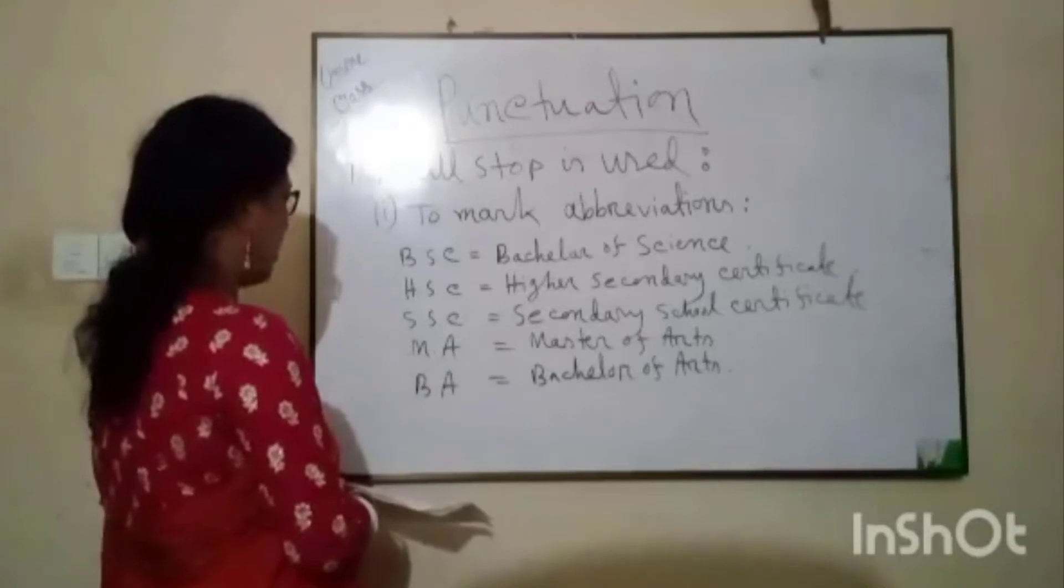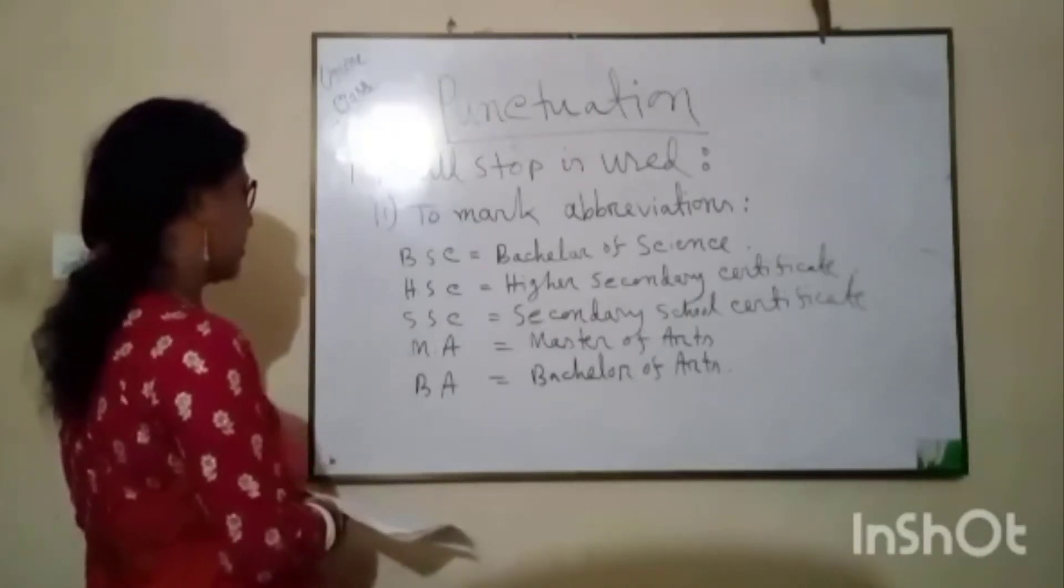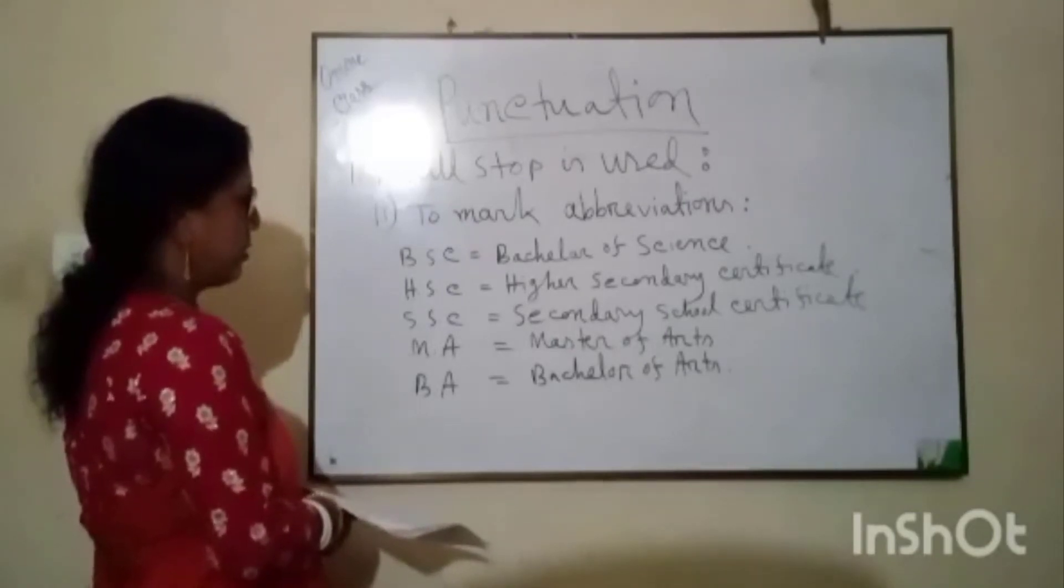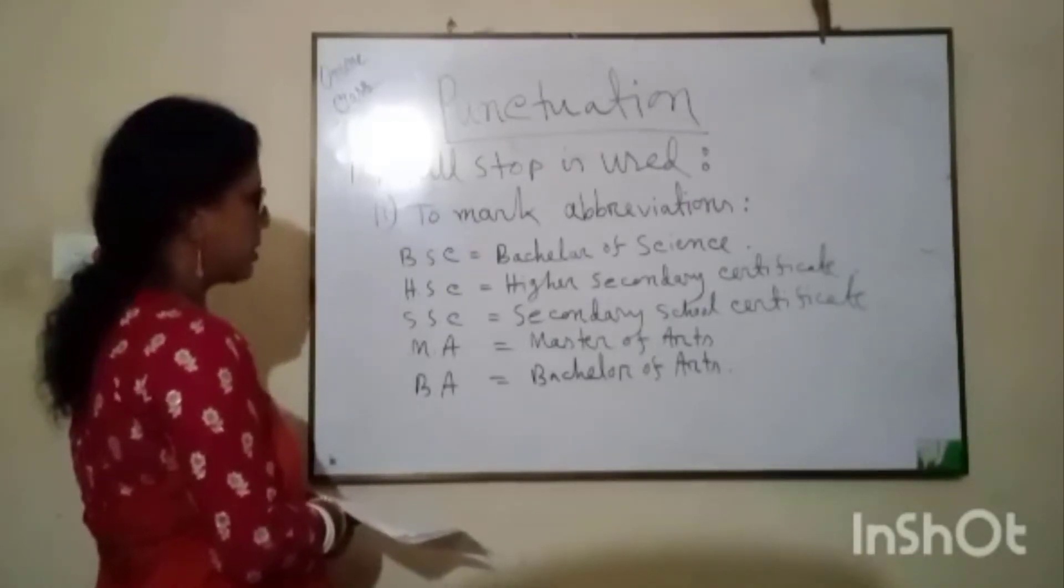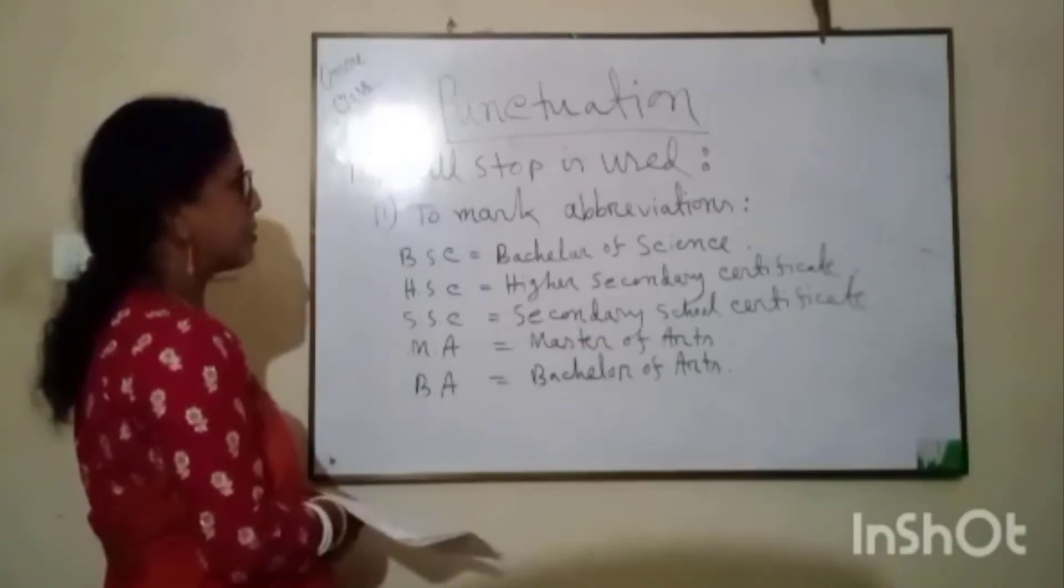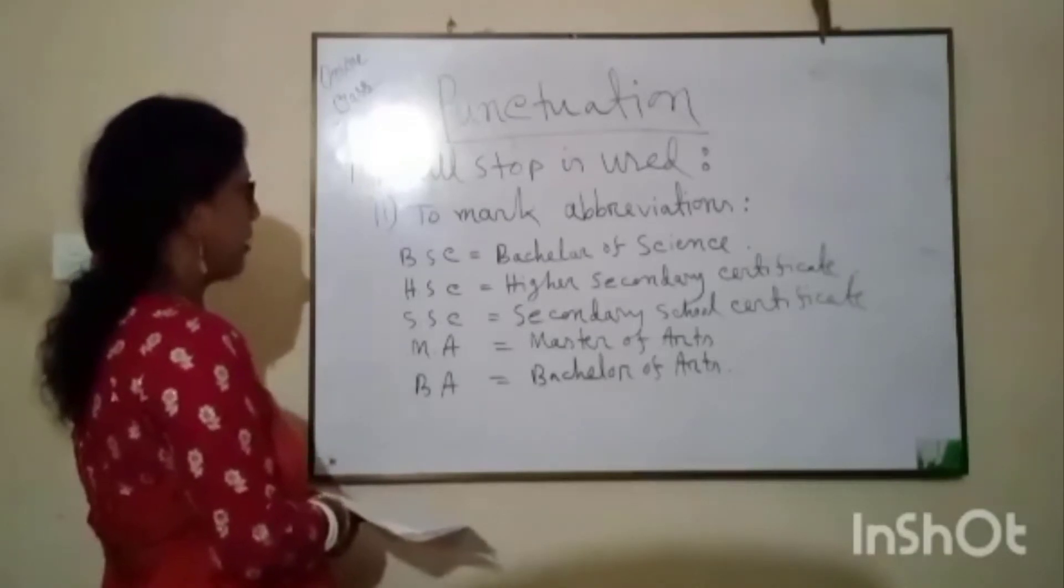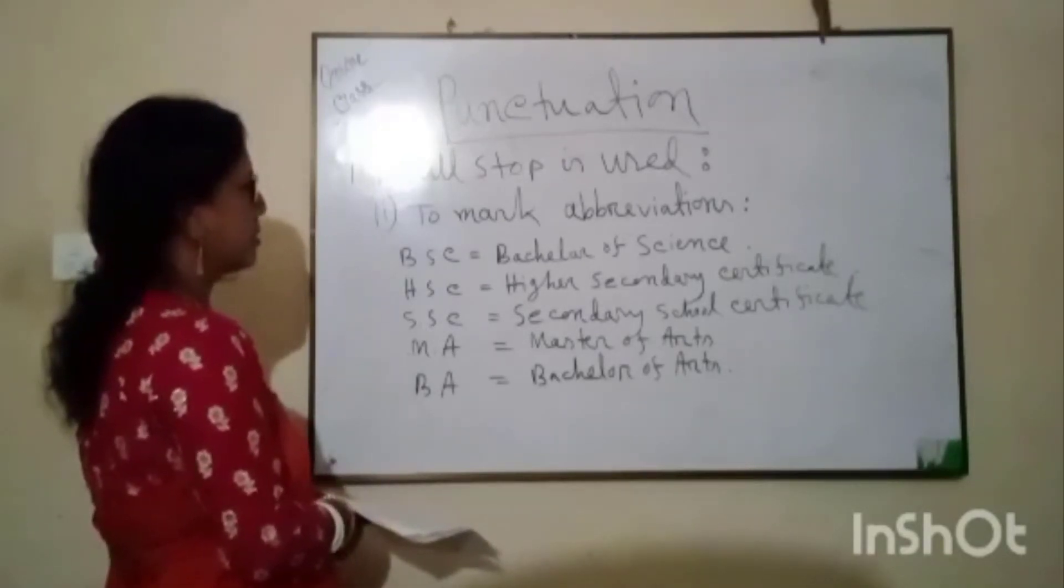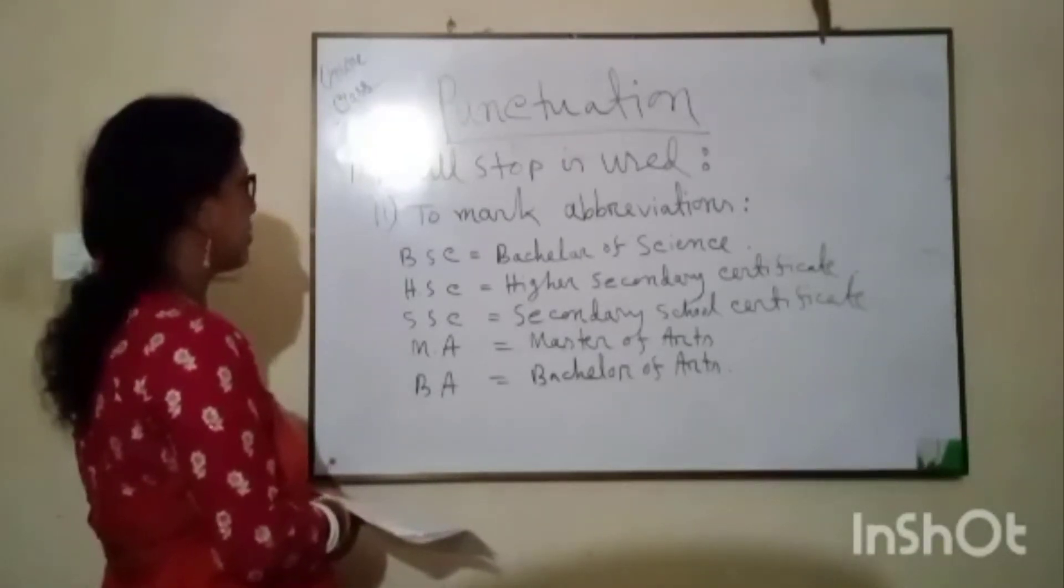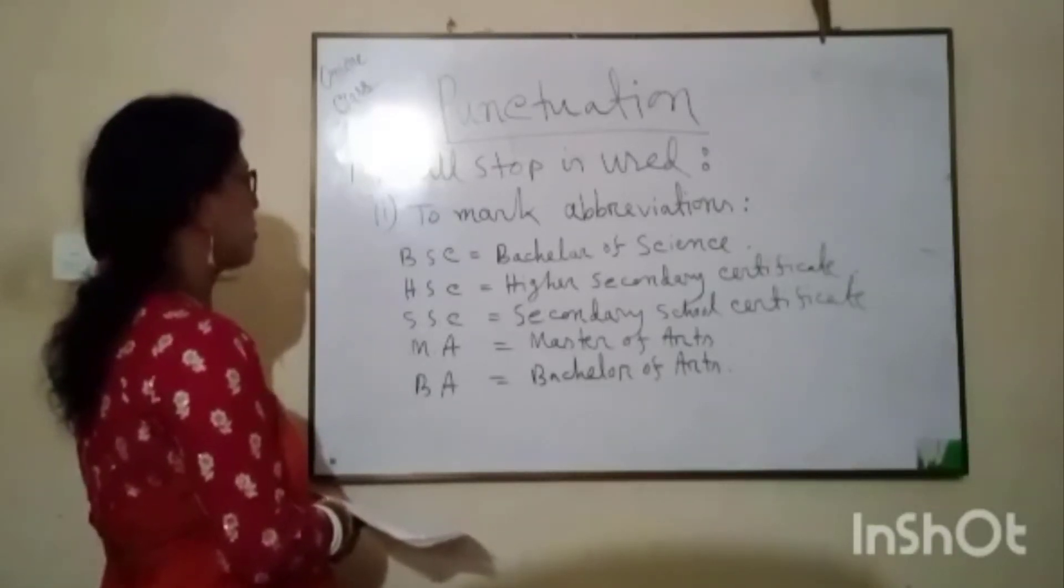M.A. - the full word is Master of Arts. B.A. - the full word is Bachelor of Arts. Dear students, Bachelor of Arts, its abbreviation is B.A. Bachelor of Science, its abbreviation is B.Sc.